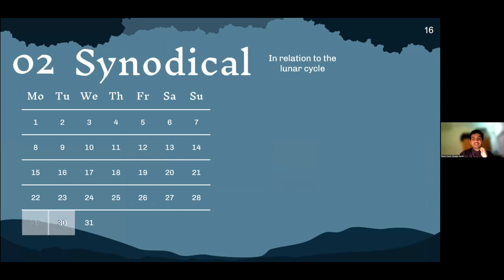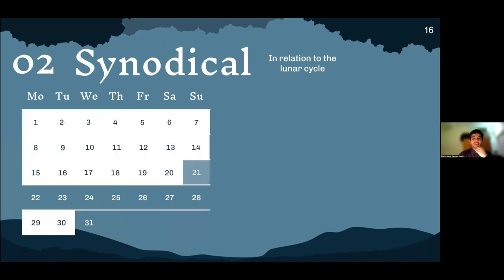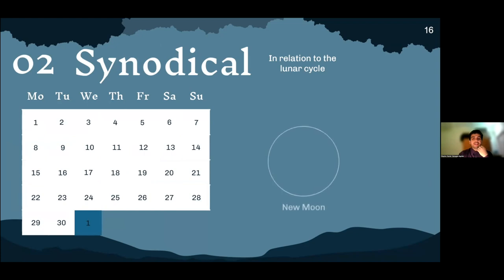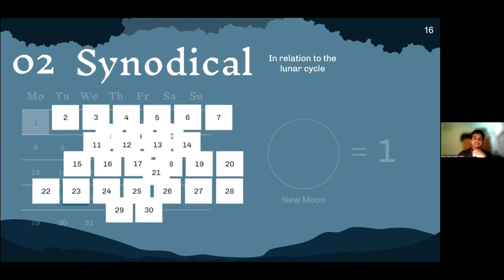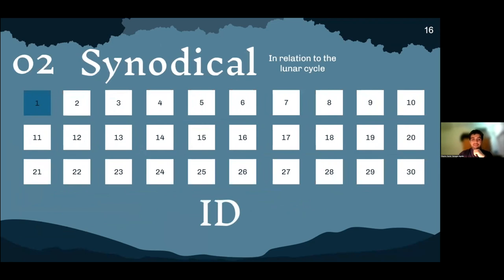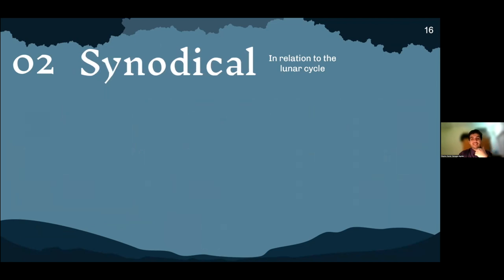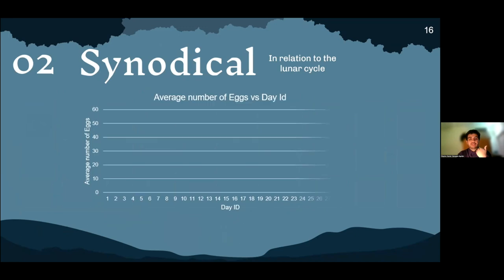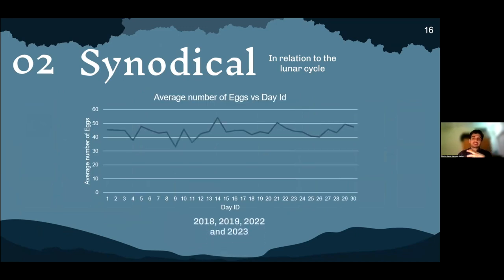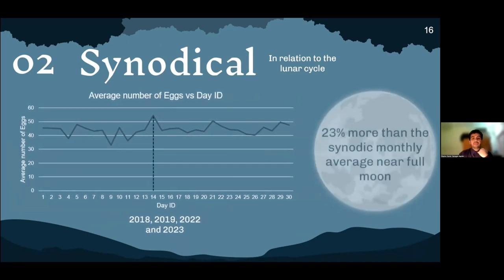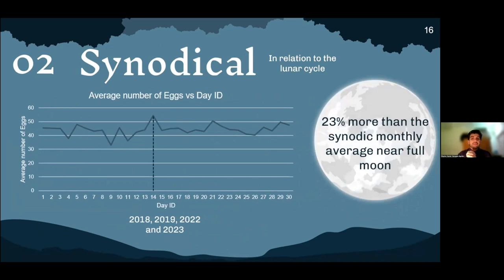As I mentioned, the synodic month has 29 to 30 days. We arbitrarily assigned the new moon the value of one, which allowed us to assign an ID for each day of the lunar cycle. We analyzed data from 2018, 2019, 2022, and 2023, as these were years of continuous egg collection and counting. We found that near the full moon, egg production is 23% higher than the monthly average — a fact not to be underestimated.